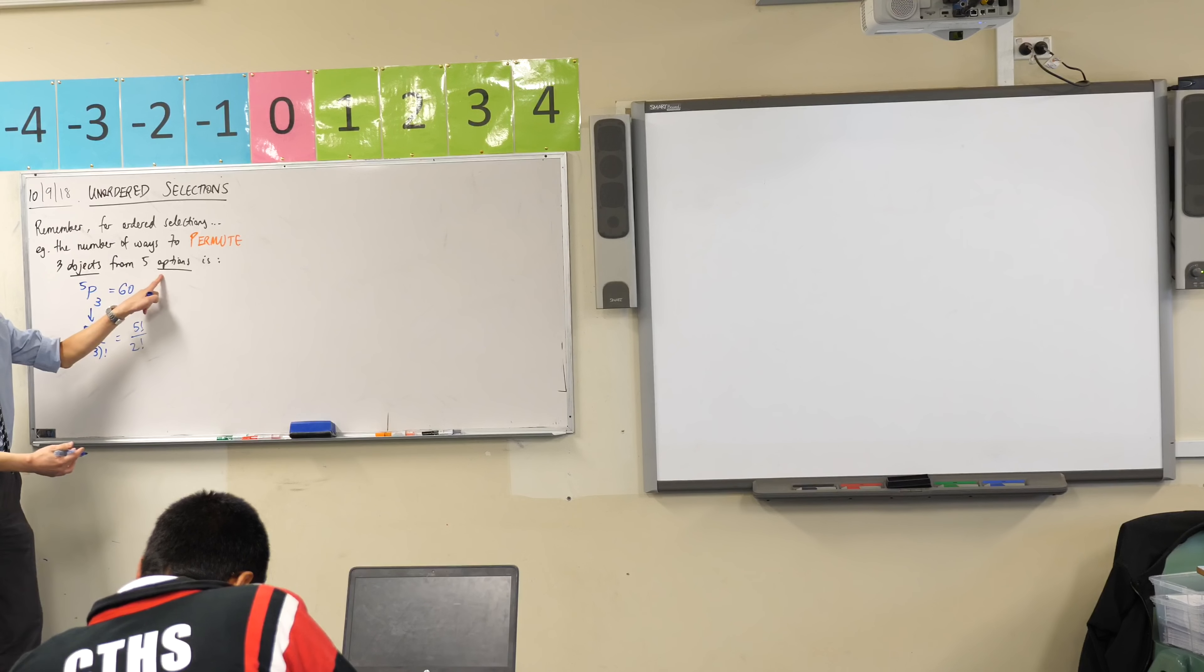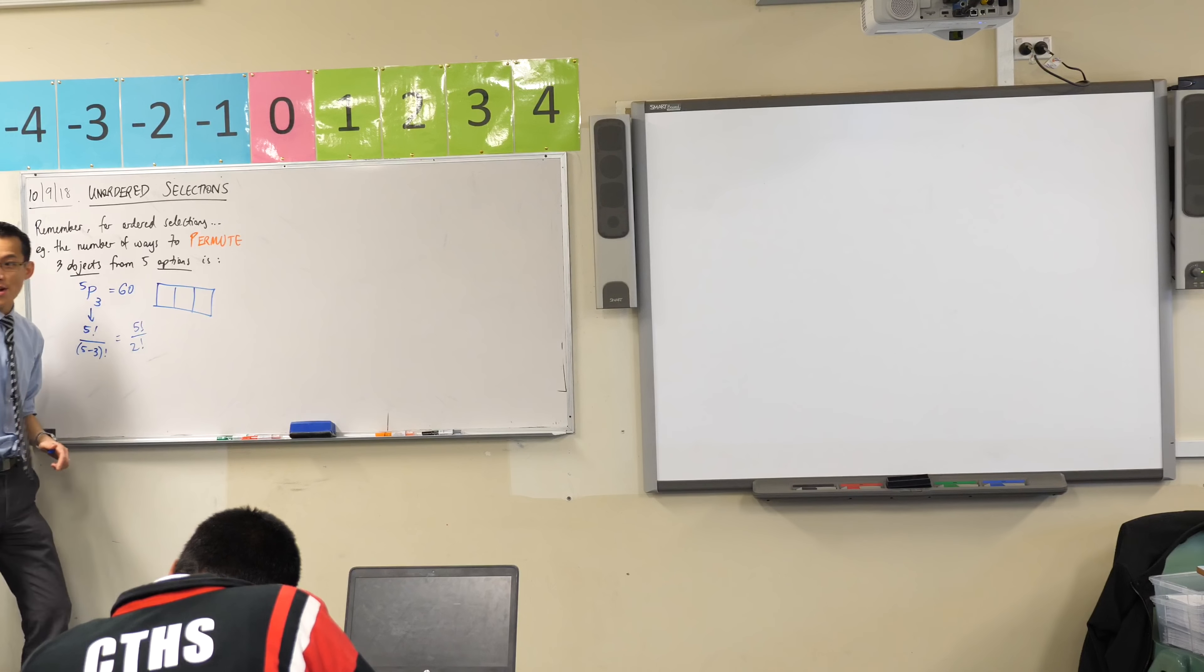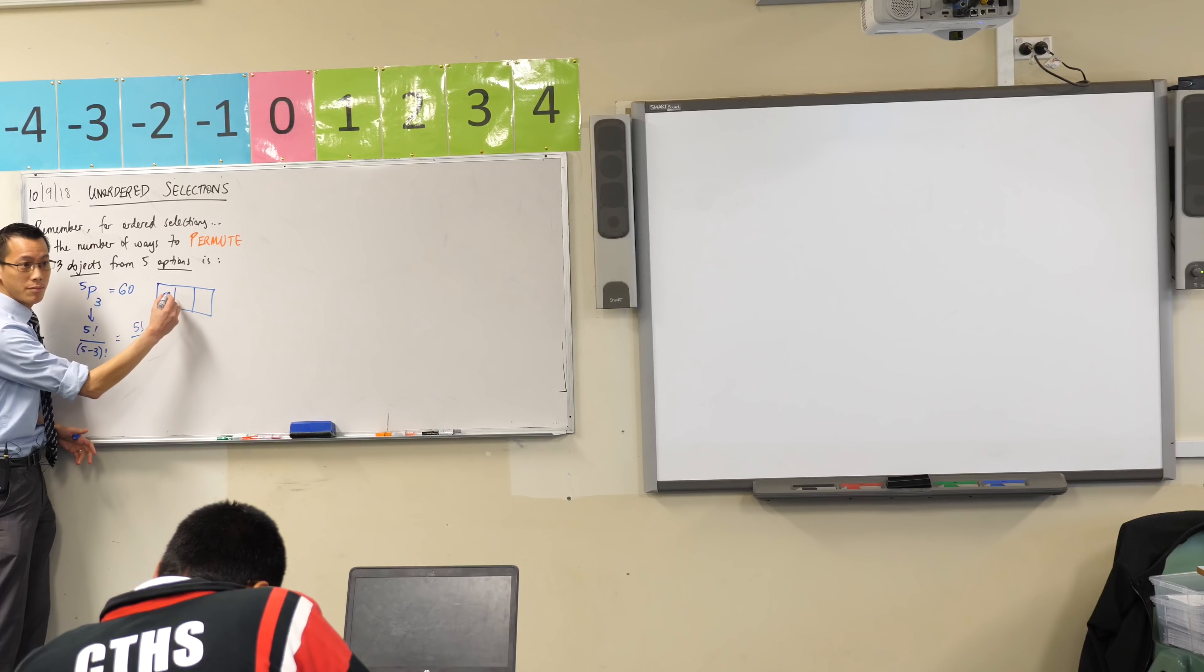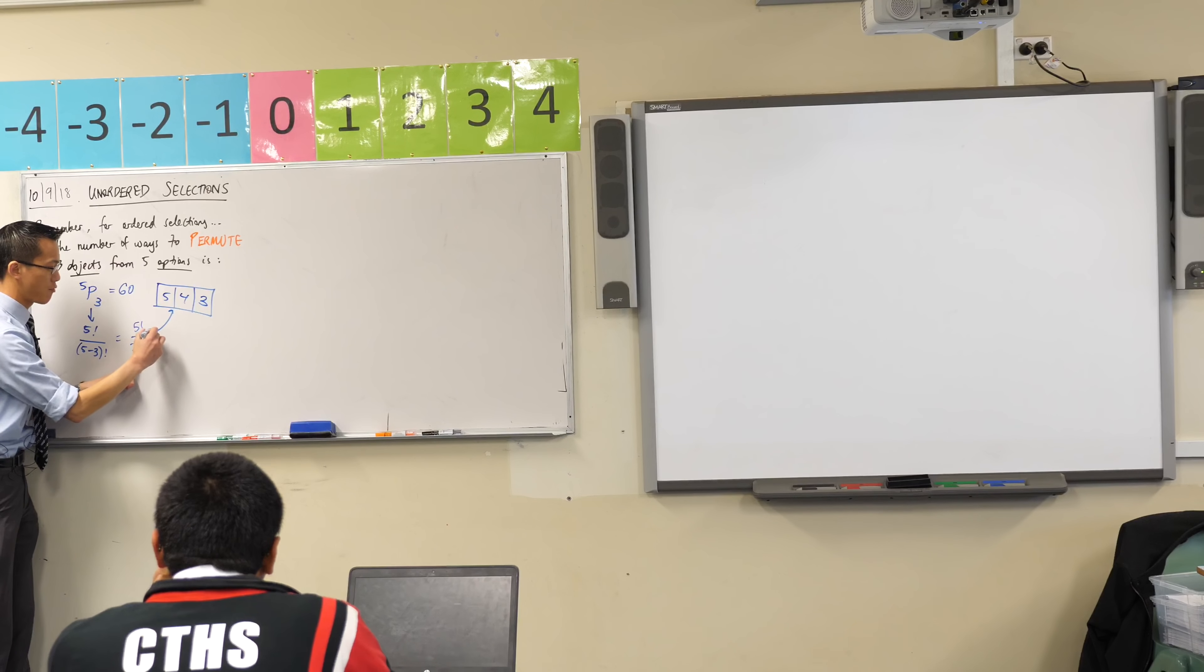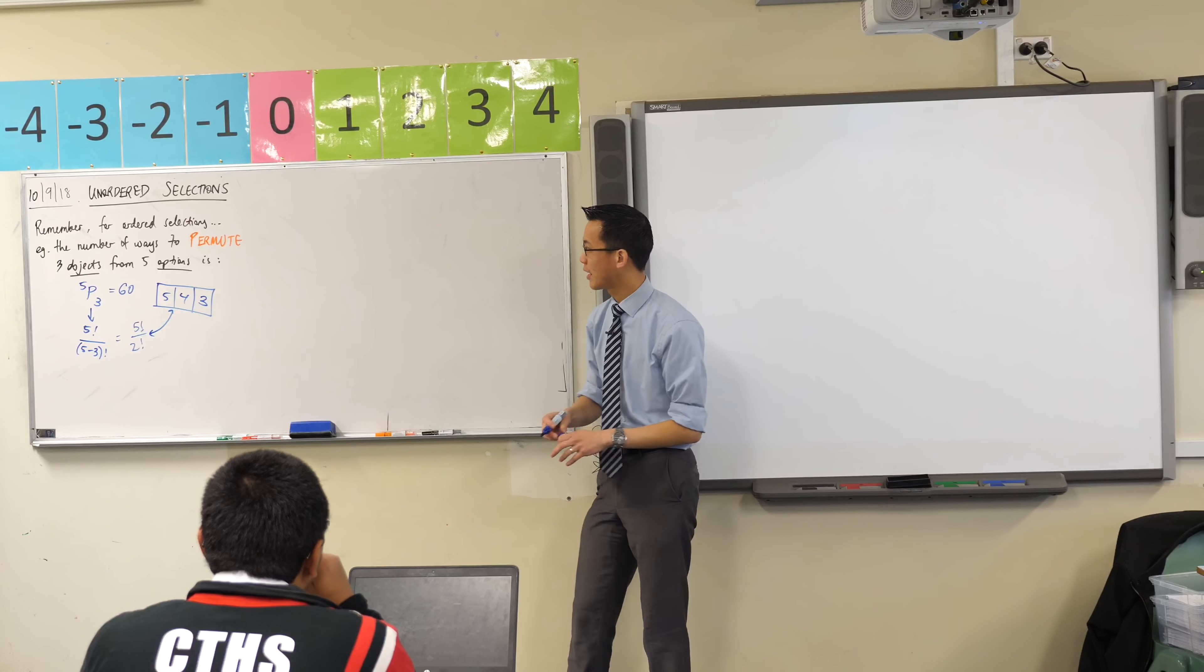Well, if you've got 5 options and you want to choose 3 of them, here's our box: 1, 2, 3 objects. The first time you've got 5 options to choose from. Then the second time you've got 4 options to choose from and 3. You can see where this comes from, right? So happy times, this all makes sense. Hopefully you remember this.